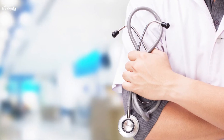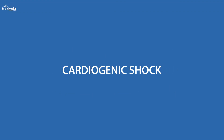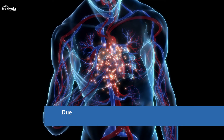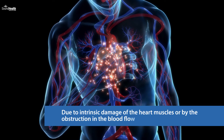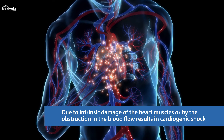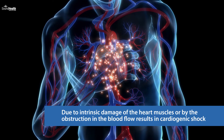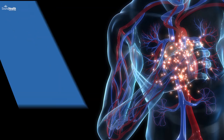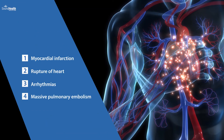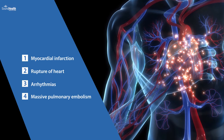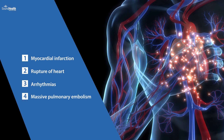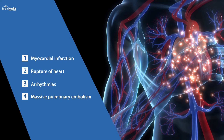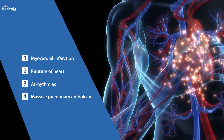Now let's move on to the classifications. Cardiogenic shock: failure to pump blood out of the heart due to intrinsic damage of the heart muscles, extrinsic pressure, or obstruction in blood flow results in cardiogenic shock. Causes include myocardial infarction, rupture of the heart, arrhythmia, and massive pulmonary embolism — which is an obstruction in the outflow from the heart during heart failure — all of which can lead to shock.